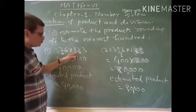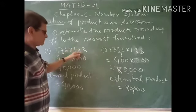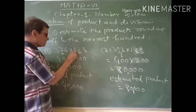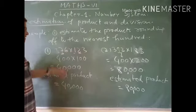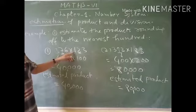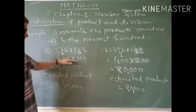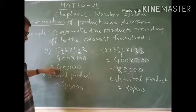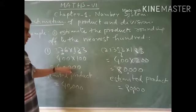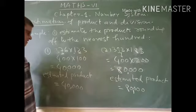Here, 2 is at the tens place, so there will be no change in the digit at the hundreds place. This will become simply 100. And now the product is 40,000. So the estimated product will be 40,000 approximately.